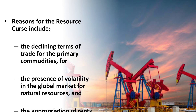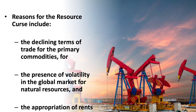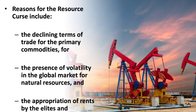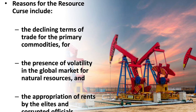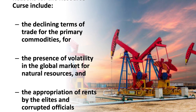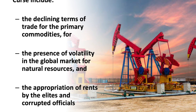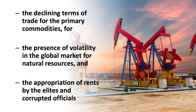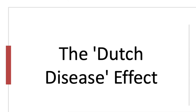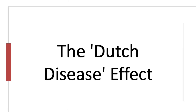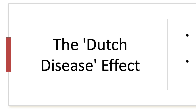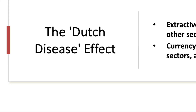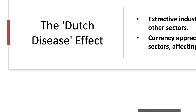There are various reasons behind this paradoxical relationship. Economists offered reasons like the declining terms of trade for primary commodities, the presence of volatility in the global market for natural resources, and most importantly the appropriation of rents by elites and corrupted officials. Moreover, there is another argument that the Dutch disease effect also causes the resource curse.